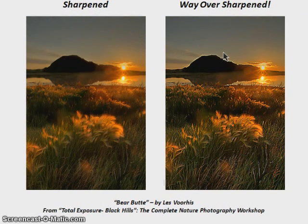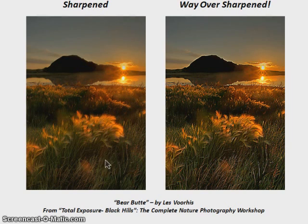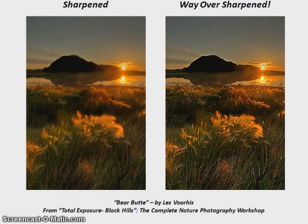The key with USM is not to overdo things. It's very easy to end up with big halos or other weird effects in your images if you overdo the settings in the USM filter. A little bit goes a long way, and you can see in this image how we have a nicely sharpened image versus obvious halos and a lot of other artifacts within the image. Most of the time you'll find that our settings are going to be nearer the bottom of the scale than the top.